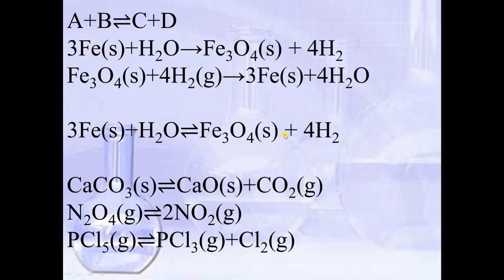If one of the products escapes out or is removed, the reaction becomes irreversible. Calcium carbonate decomposes to give calcium oxide and carbon dioxide — this is also reversible because calcium oxide reacts with carbon dioxide to give back calcium carbonate. Similarly, N₂O₄ gives NO₂ and NO₂ gives back N₂O₄. Also, PCl₅ gives PCl₃ plus Cl₂, and this reaction can take place in the backward direction as well.